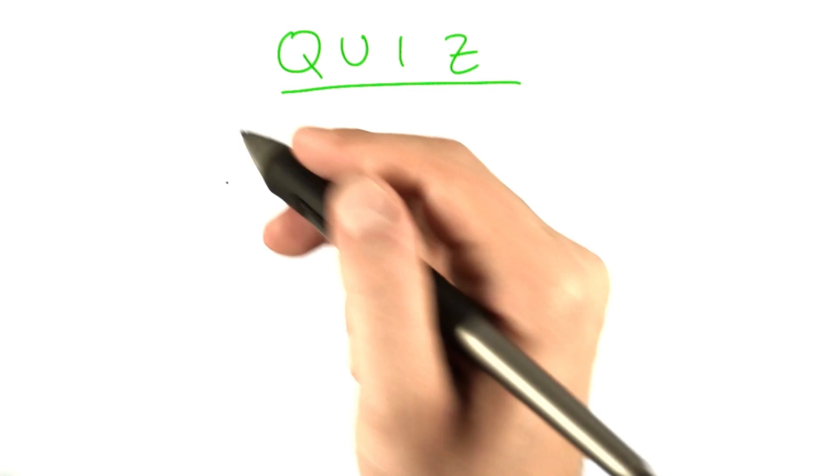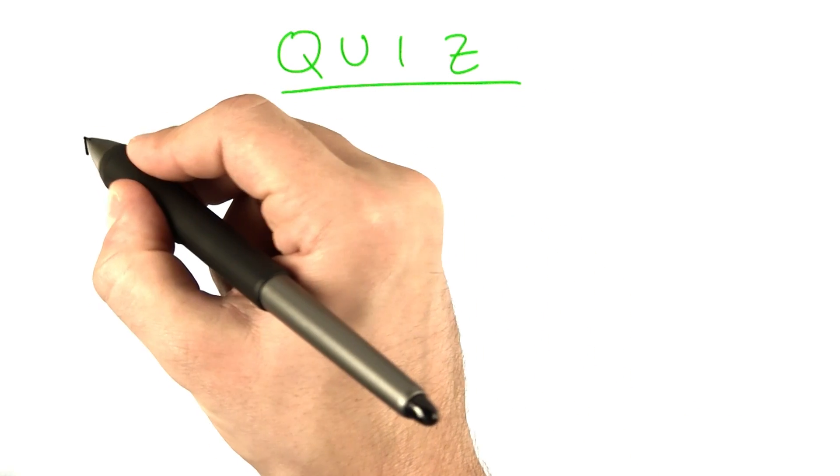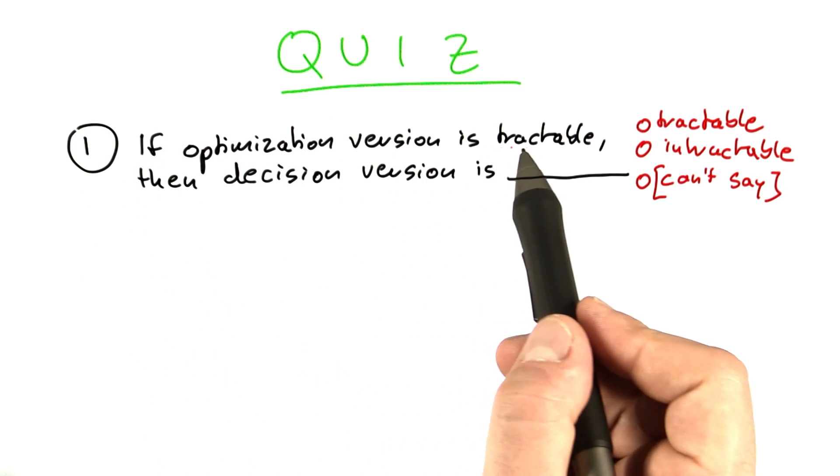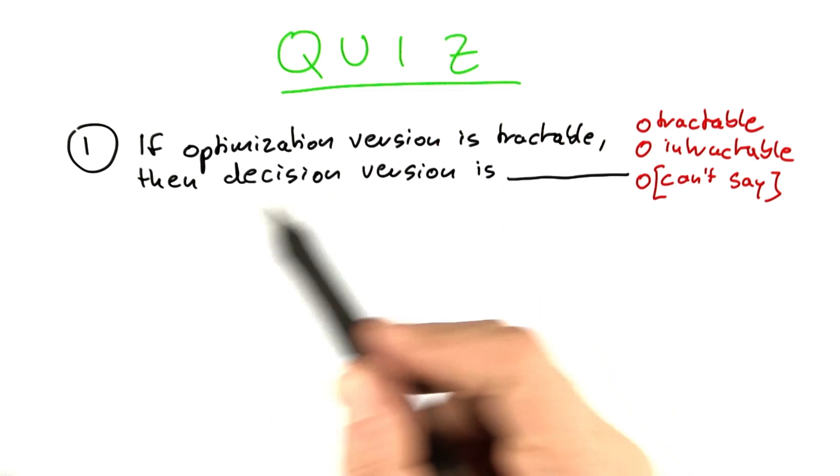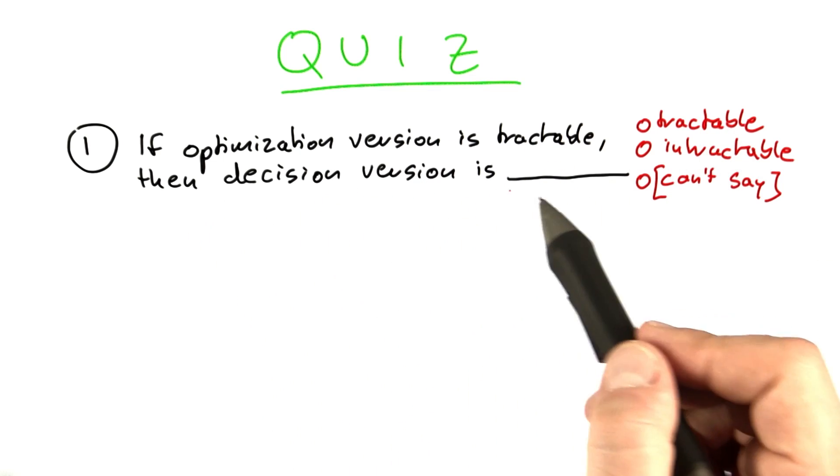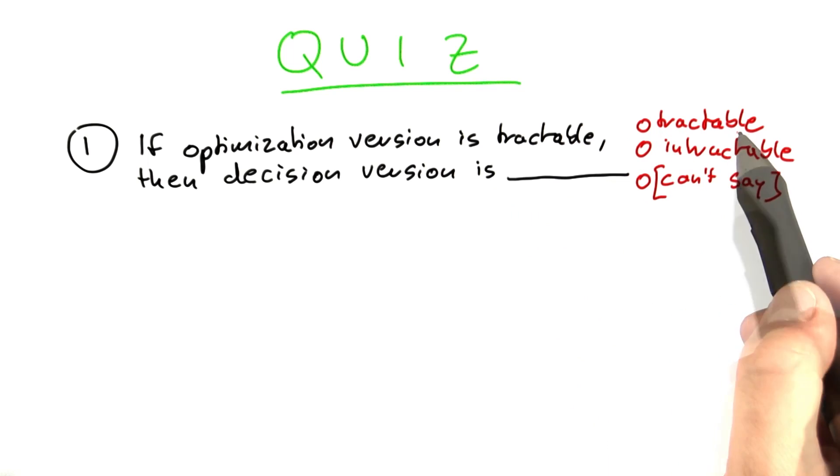And I would like you to think about four things and then give me your answer. So the first question is, if the optimization version of a problem turns out to be tractable, then what about the decision version of that problem? Do we know that decision version for sure to be tractable, intractable?